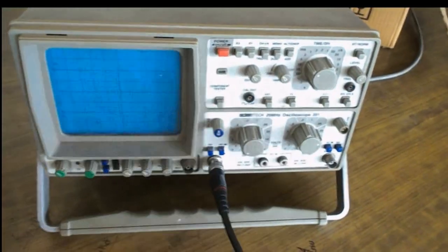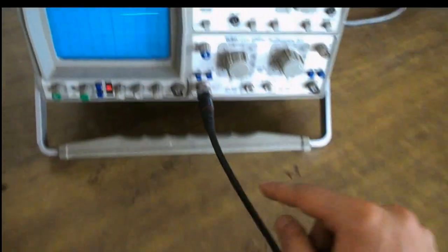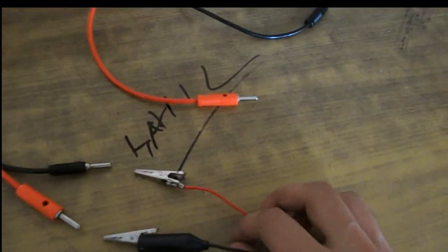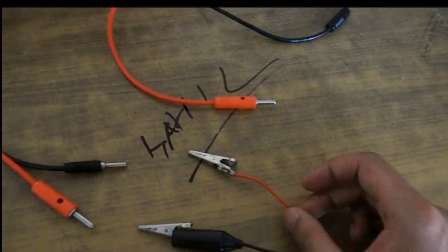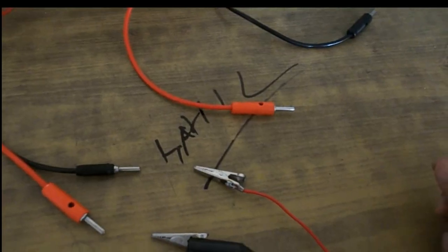This is the CRO which can be switched on using this red button. There is a probe that is coming out from here which has two leads. One is black and one is red. This red lead can be used to analyze the signal.